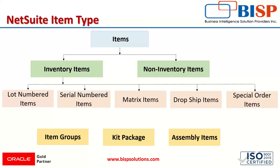Inventory items have their own subdivisions. Under inventory items, they are divided into lot numbered items, serial numbered items, matrix items, drop ship items, and special order items.